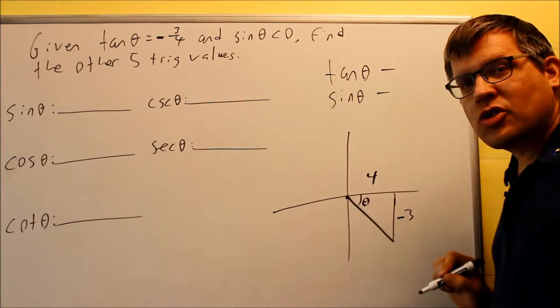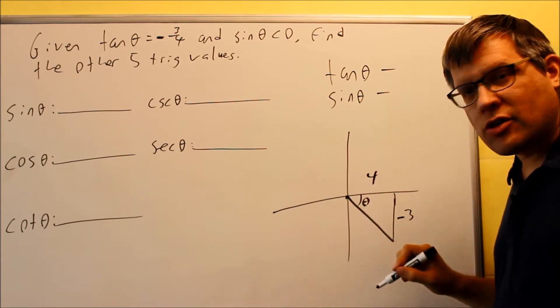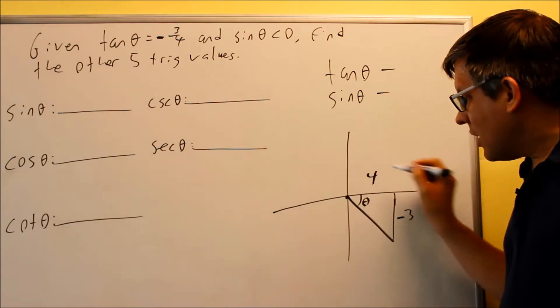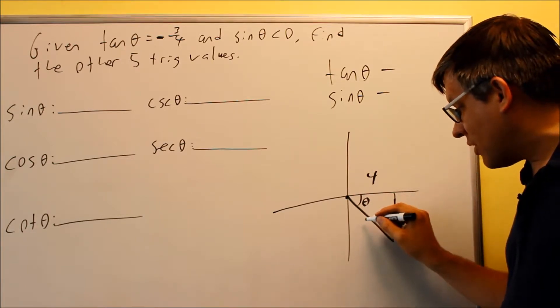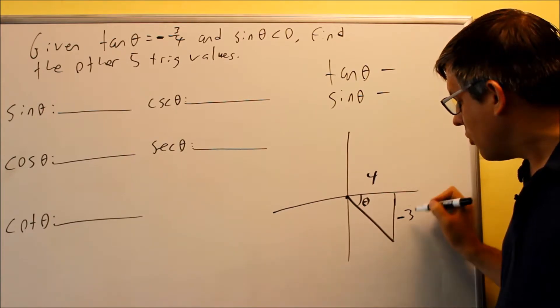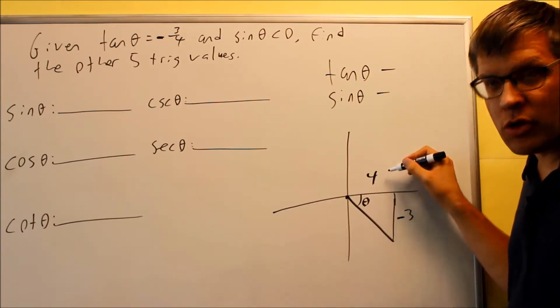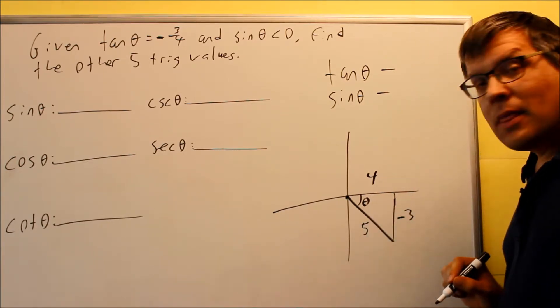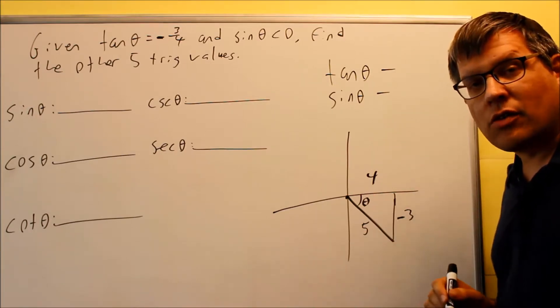Hypotenuse, however, is always going to be positive regardless of which quadrant you're in. So it doesn't matter which of these four quadrants you're in, hypotenuse always is going to be positive. Now I can recognize that this is going to be a 3, 4, 5 triangle, so I could find out that this side would be 5. Or I could use Pythagorean theorem: negative 3 squared plus 4 squared would be 25, the square root of that would give you 5. So either way, you're going to get a 5 for your missing side.